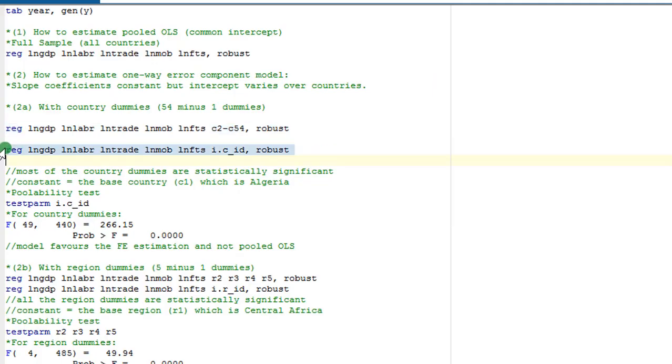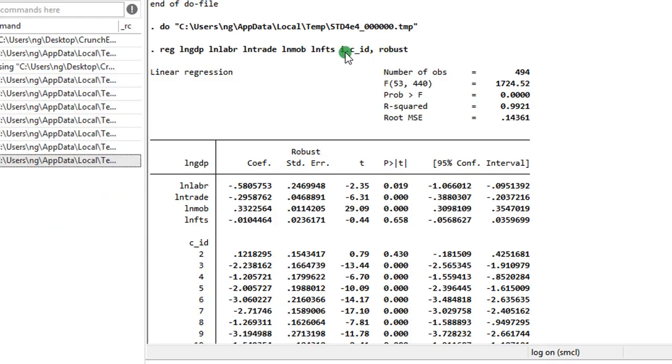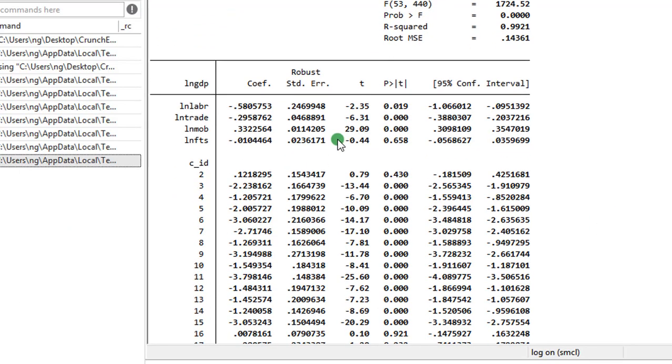You can see that the result is completely different from the pooled OLS and the reason is because we have made provision to recognize that the countries in this data or in this sample are not the same. Let us run this command using the factor variable. It's the same result like I said. You can see here i.cid using the factor variable. It's the same result you get.